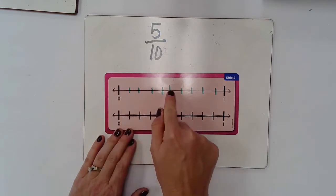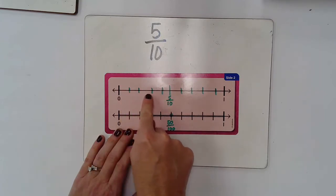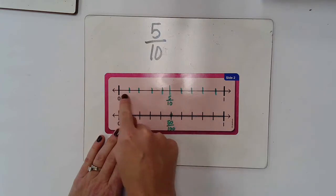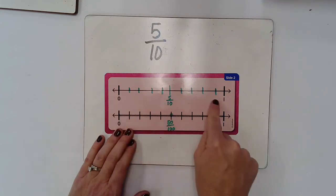So if I were to figure out what fraction is exactly halfway, I could count up one, two, three, four, five. So I know it's going to be five tenths because I'm on the fifth line and there are ten spaces.